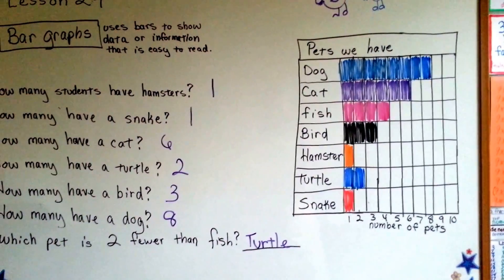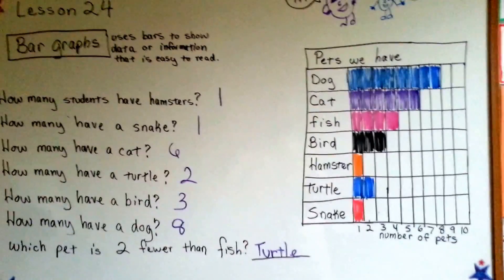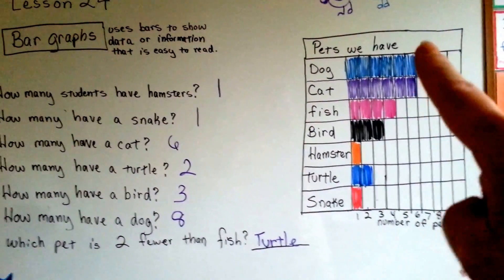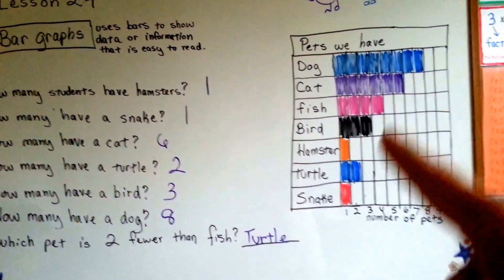Next time you want to compile some information, you can make your own bar graph. Or, if you're reading one, you'll know how to go to the end and see what the number is.